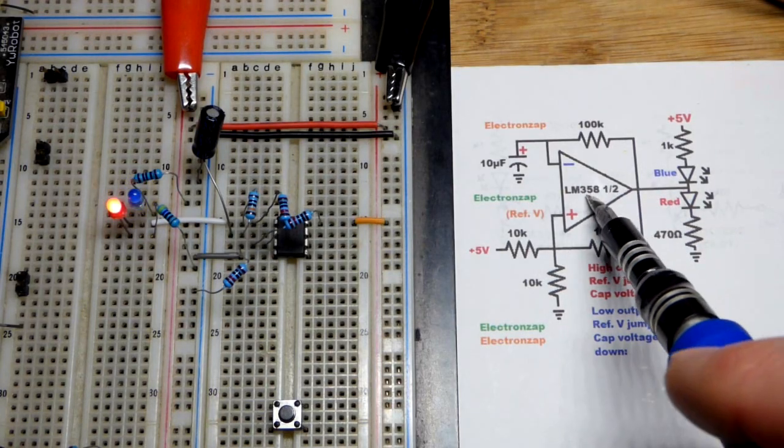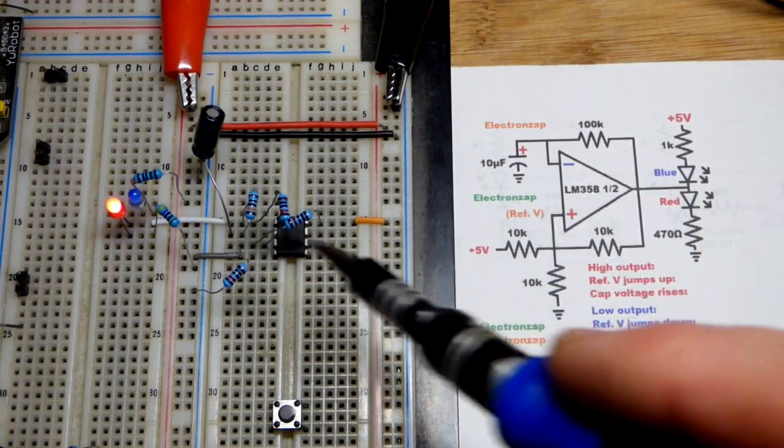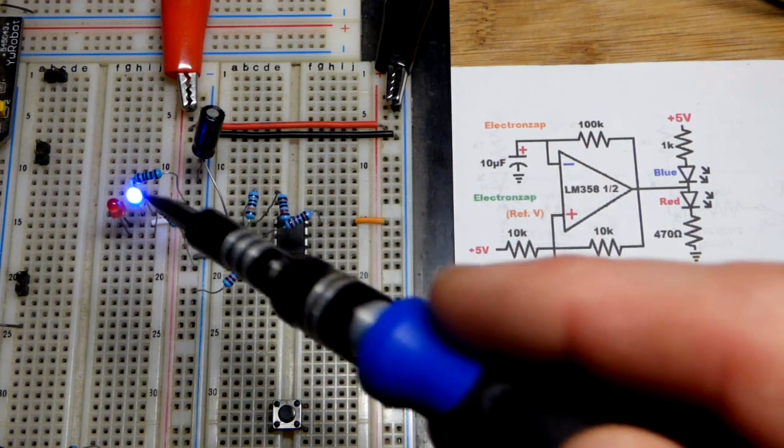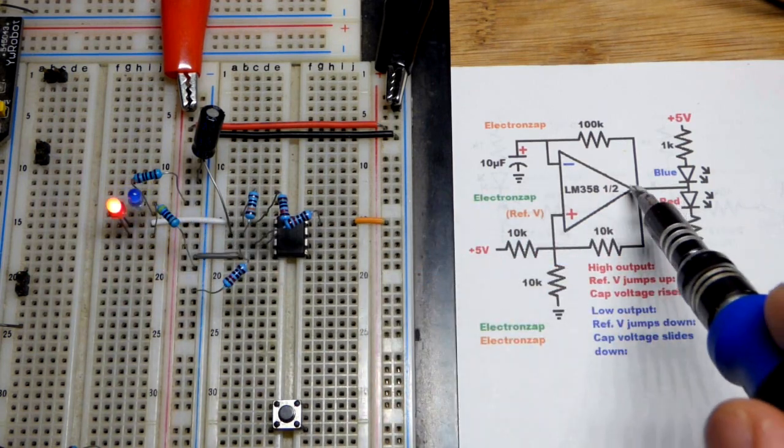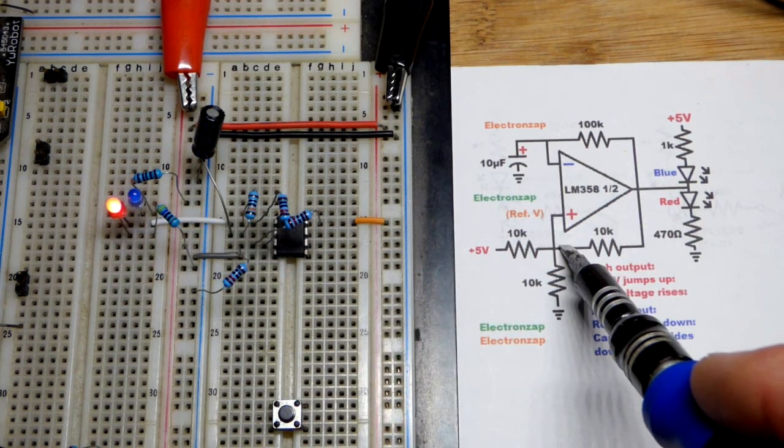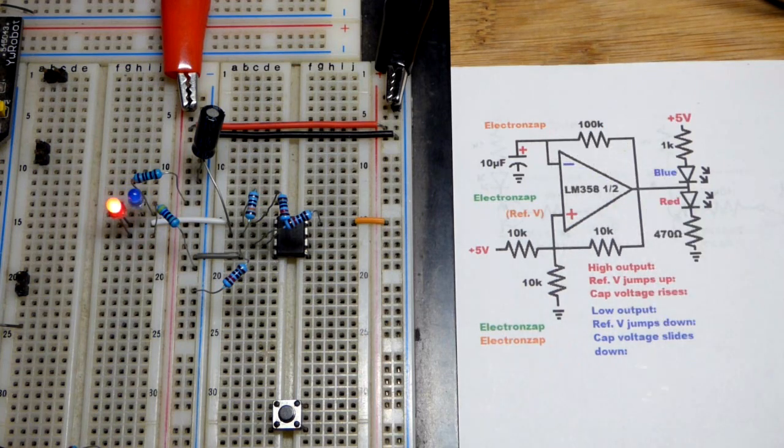So now in this video, we wired an op amp. I'm using one of the LM358s to alternate a couple LEDs. We're doing that thanks to both positive feedback right there and negative feedback.